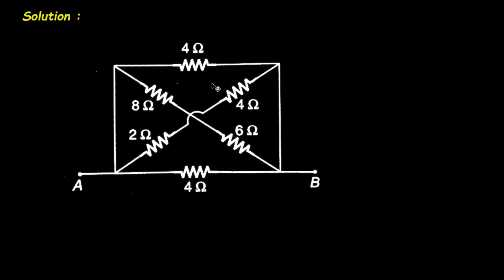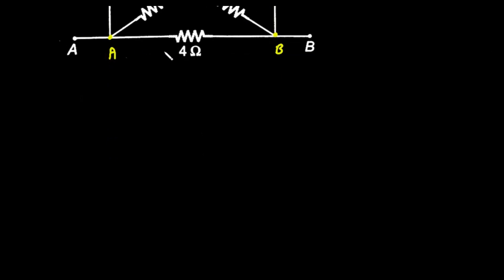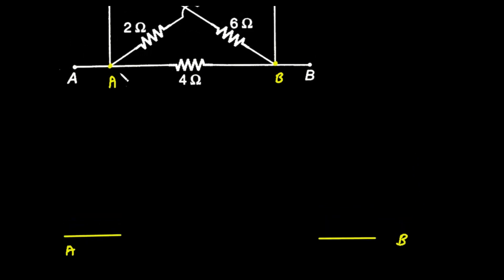Solution. First of all, we will take this network. Now here we can see this is the same node or terminal — we can say this is A. And here also this is A. And at this node, this is B. Similarly, this is also B because they are both the same. Now we will redraw this network and simplify it. We have two terminals A and B. In between terminal A and B, there is one resistance of 4 ohm. So this is 4 ohm.